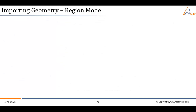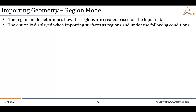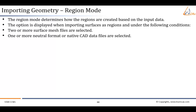Let us discuss the region mode option for CAD import. The region mode determines how the regions are created based on the input data. The option is displayed when importing surfaces as regions and under the following conditions: two or more surface mesh files are selected, or one or more neutral format or native CAD data files are selected.